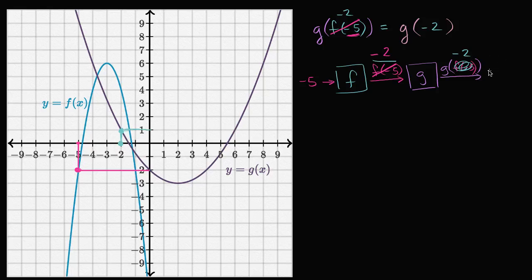g of negative two is one. So this is going to be one. g of f of negative five, which sounds really complicated, we're able to figure out is one. Because you input negative five into f, it outputs negative two, and then you input negative two into g, it outputs one. And we're all done.